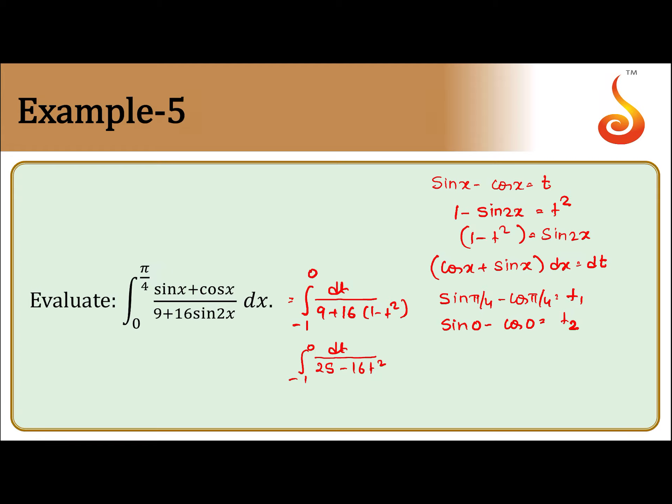Let us take minus out: minus integral from -1 to 0 of dt/(16t² - 25). This can be written as -1/16 times integral from -1 to 0 of dt/(t² - (5/4)²). So it is in the form of x² minus a².